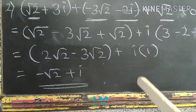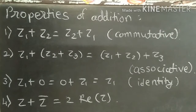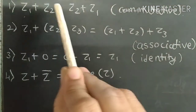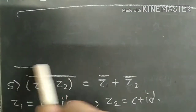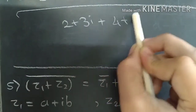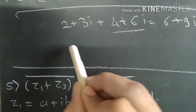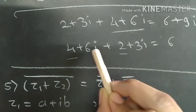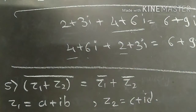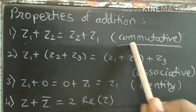If you have any doubt in addition of complex numbers, comment below and we will make a special video. There are some properties of addition of complex numbers. When we add two complex numbers, Z1 plus Z2 equals Z2 plus Z1 — the same answer results either way. For example, 2 plus 3i plus 4 plus 6i gives 6 plus 9i. If we reverse the order: 4 plus 6i plus 2 plus 3i also gives 6 plus 9i. This property is known as the Commutative property.